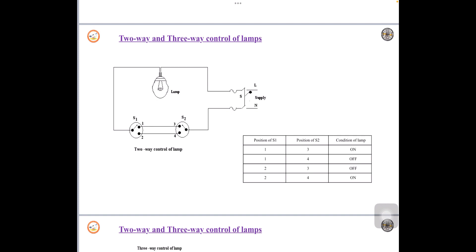Similarly, one more condition is possible. That is S1 is at 2 and S2 is at position 4. There is a continuity between S1 to 2, 2 to 4, 4 to the other end of the switch S2, S2 to neutral, hence the lamp will glow. So this is how exactly the wiring of 2-way is carried out at different places.